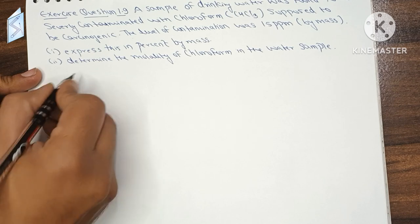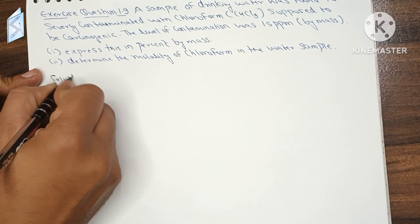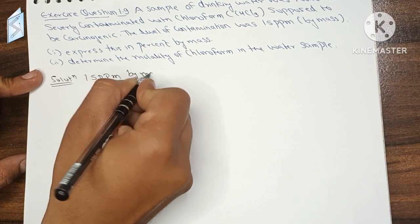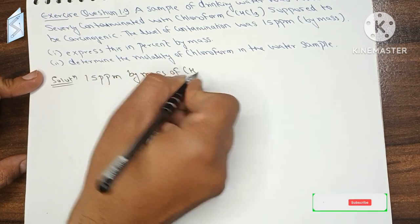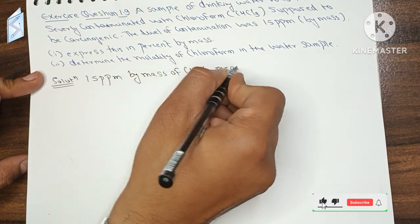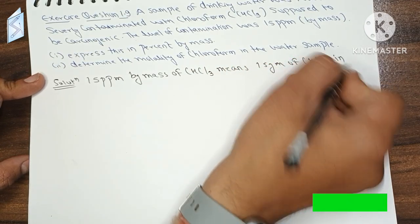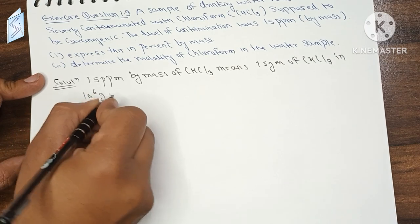First of all, 15 ppm by mass means 15 grams of CHCl3 in 10 to the power 6 grams of solution.